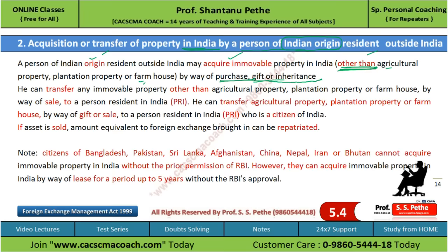He can transfer any immovable property other than agriculture property, plantation property, and farmhouse by way of sale to a person resident in India. He can also transfer agriculture property, plantation property, and farmhouse by way of gift or sale to a person resident in India who is a citizen of India. If such property is sold by such PRO who is of Indian origin, then an amount equivalent to foreign exchange brought in can be repatriated.